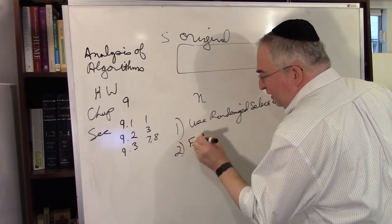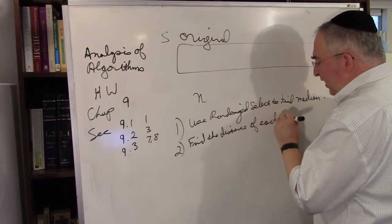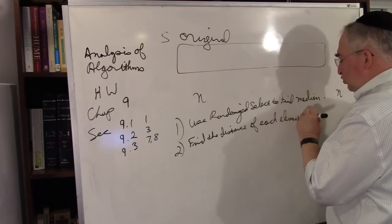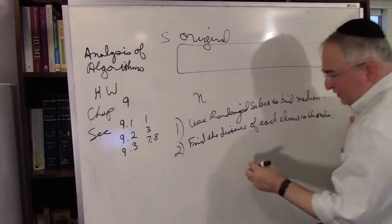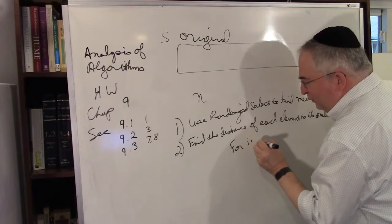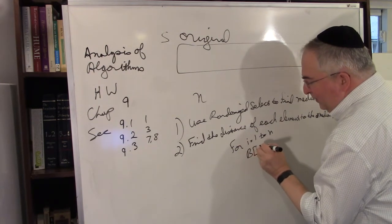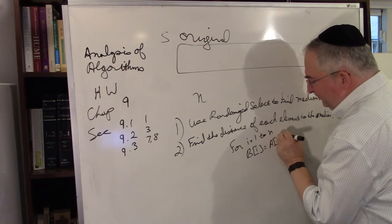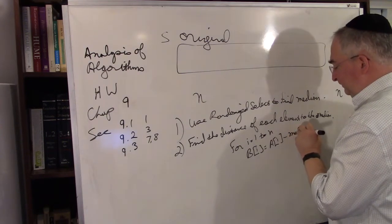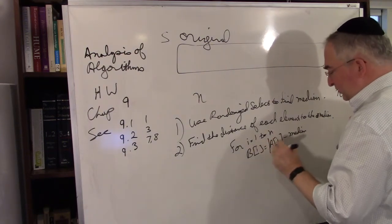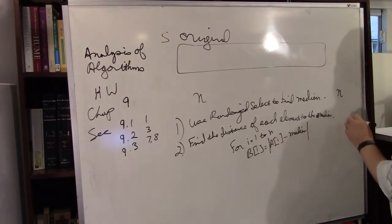Step 2: find the distance of each element to the median. Basically, for i equal 1 to n, set b of i equal to the absolute value of a of i minus median. We want the absolute value — that's the distance. Now in order to do this, this is a loop of size n.